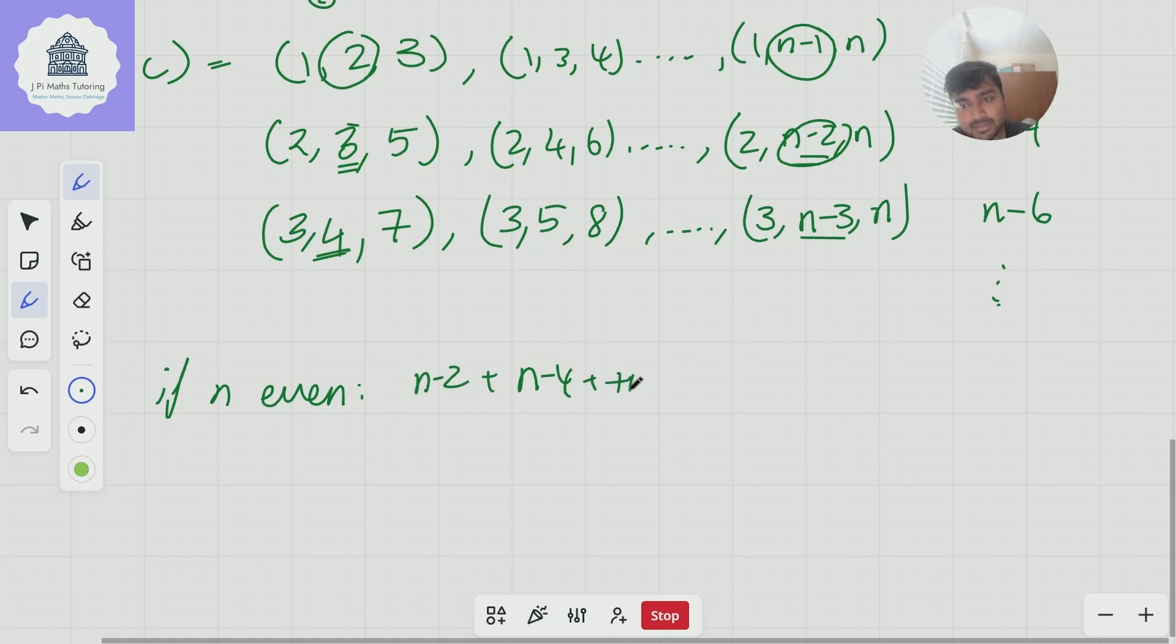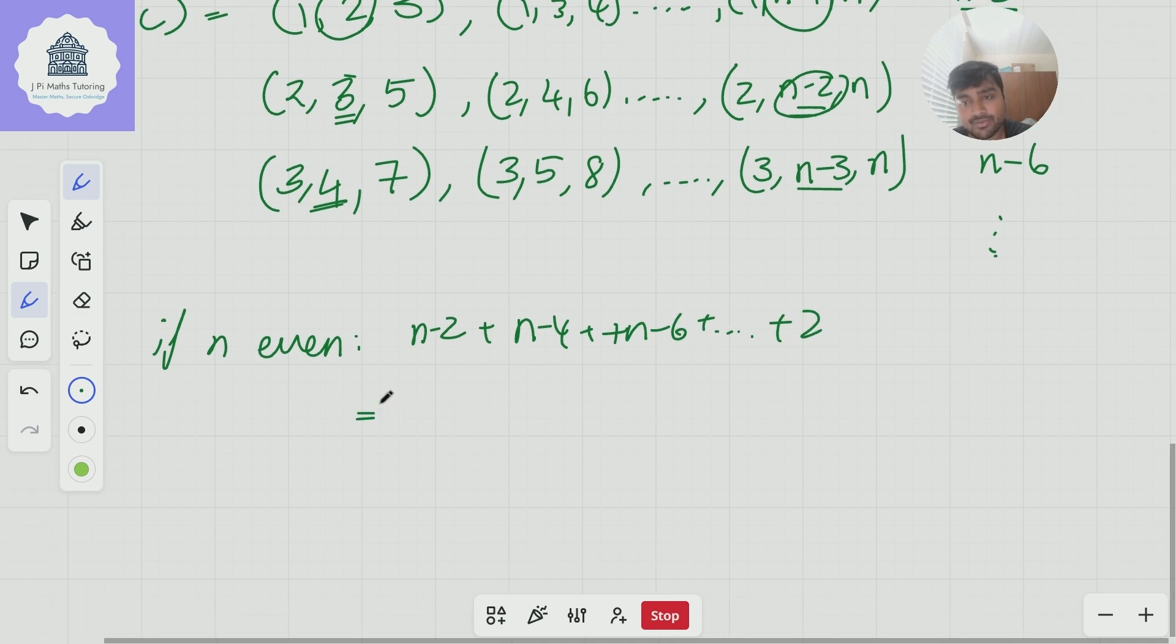So if n is even this kind of sum is going to give us n minus two plus n minus four plus n minus six all the way down to two and if we just factor all of these terms here are even so we can factor out a two from them and we get n minus two over two. In fact maybe if n is even maybe it's easy just to say n is two k or something so let me just go and do that so if n is even n is two k.